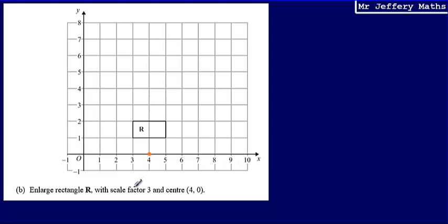And what I now need to do is enlarge this with a scale factor of 3 from that point. Now, the way that I like to do this is I like to measure the distances from my center to each of the corner points. And then I'm just going to take that distance and multiply it by the scale factor, which is 3 in this case.